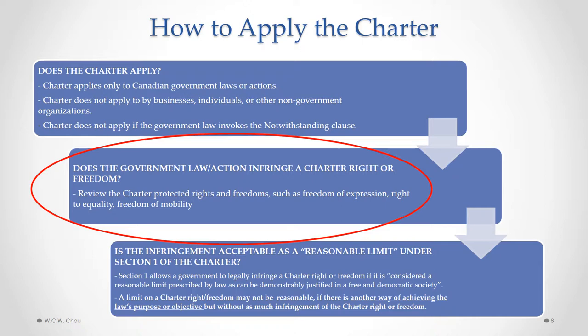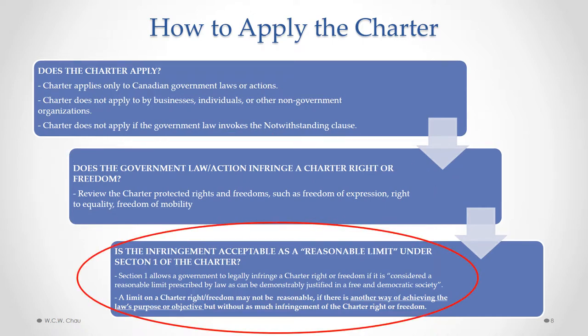If we determine that a specific Charter right or freedom has been infringed, the next and last question we ask is: is the infringement of the Charter right acceptable as a reasonable limit under Section 1 of the Charter? Section 1 allows a government to legally infringe a Charter right or freedom if it is considered a reasonable limit prescribed by law as can be demonstrably justified in a free and democratic society. A limit on a Charter right or freedom may not be reasonable if there is another way of achieving that law's purpose or objective but without as much infringement of the Charter right or freedom.